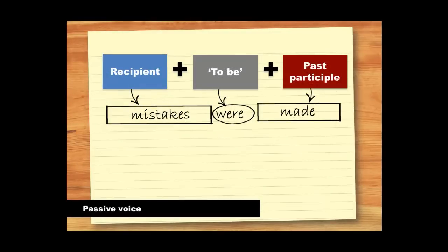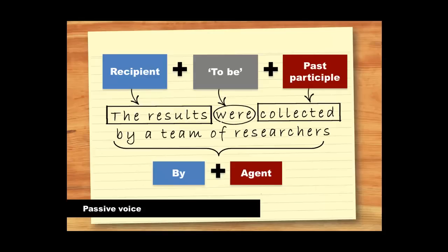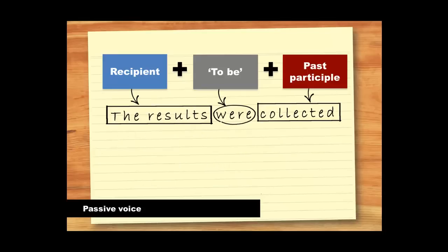We construct the passive voice by putting the recipient of the action first, then the appropriate form of the verb to be and the past participle. Here's another example. The agent who did the action, in this case the researchers, may or may not be included in the sentence.